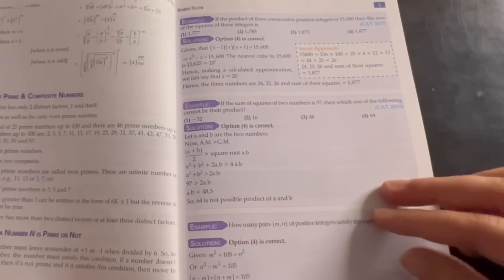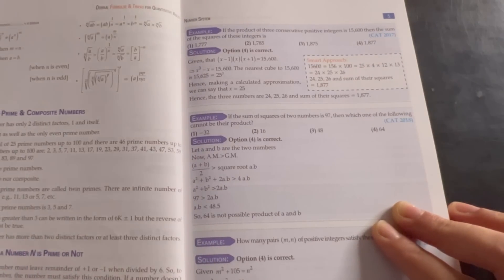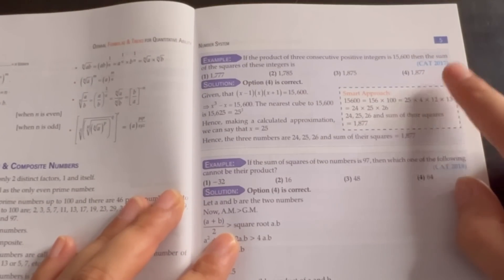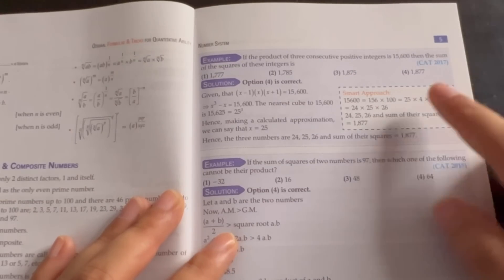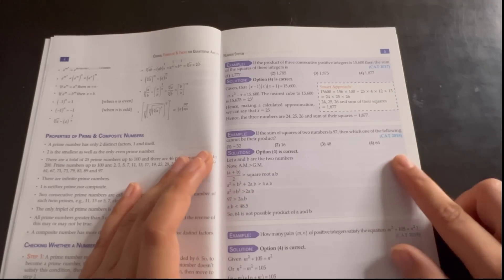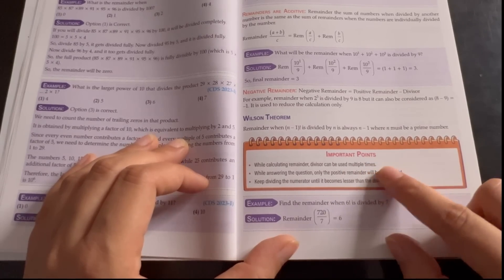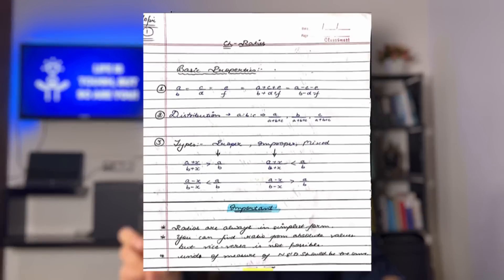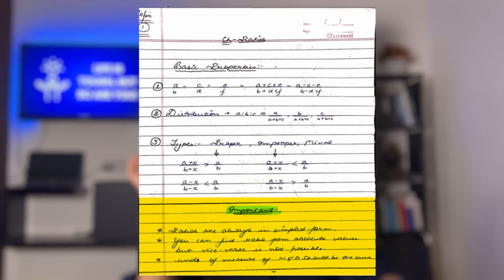For example, on page number 5 you will see CAT 2017, 2018, 2019 — the past year questions that use a particular property or concept are also mentioned. If you look at the top example on page number 5, you will see a small box written 'Smart Approach,' showing how you solve the same question the normal way and how you solve it quickly in an exam. On page number 11 there is a box written 'Important Points' — these are key things to remember in that particular chapter while solving questions.